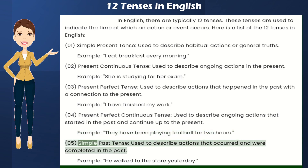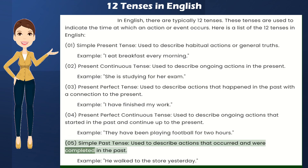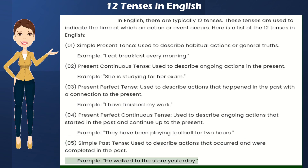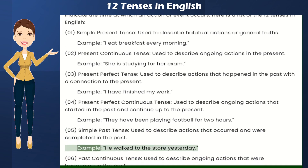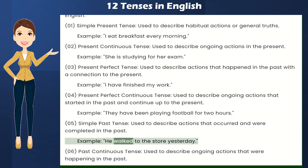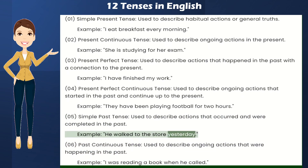Simple Past Tense — used to describe actions that occurred and were completed in the past. Example: He walked to the store yesterday.